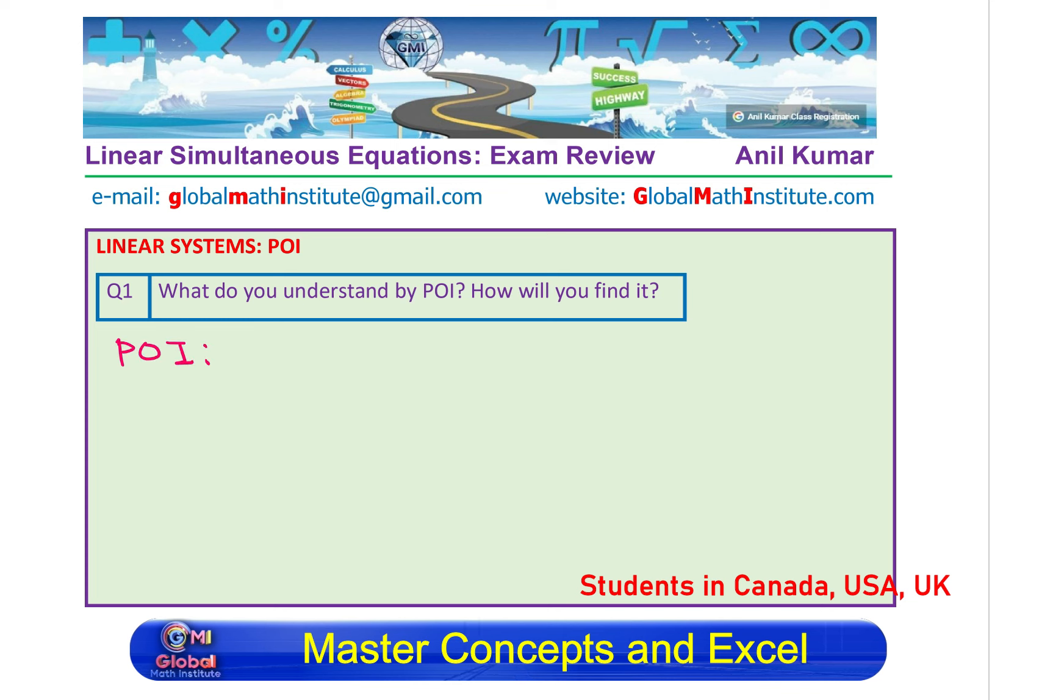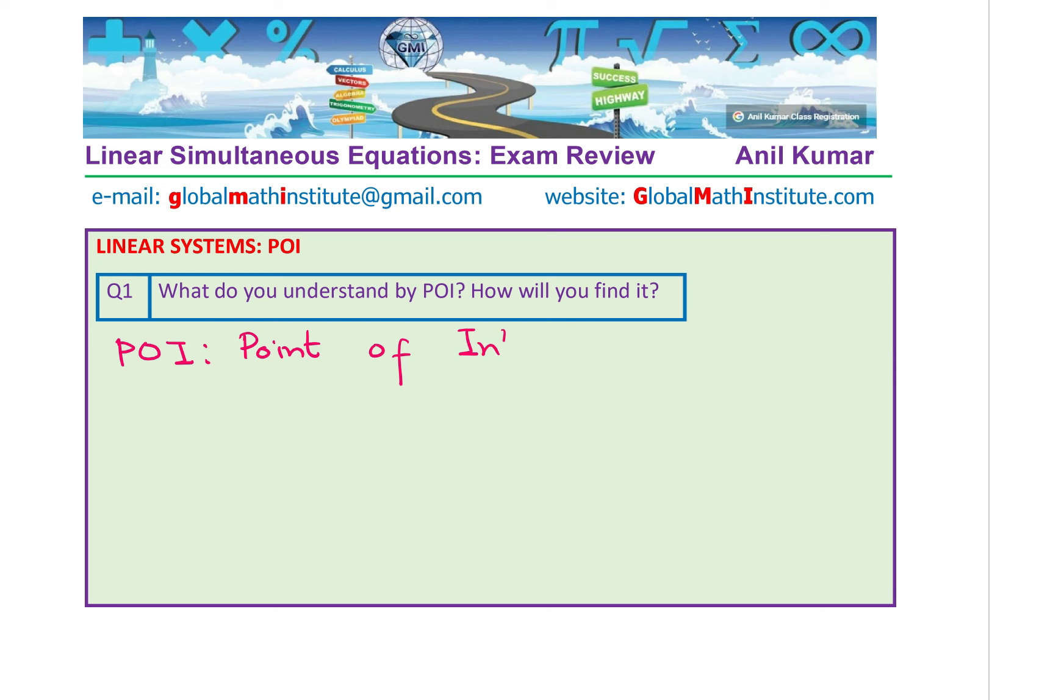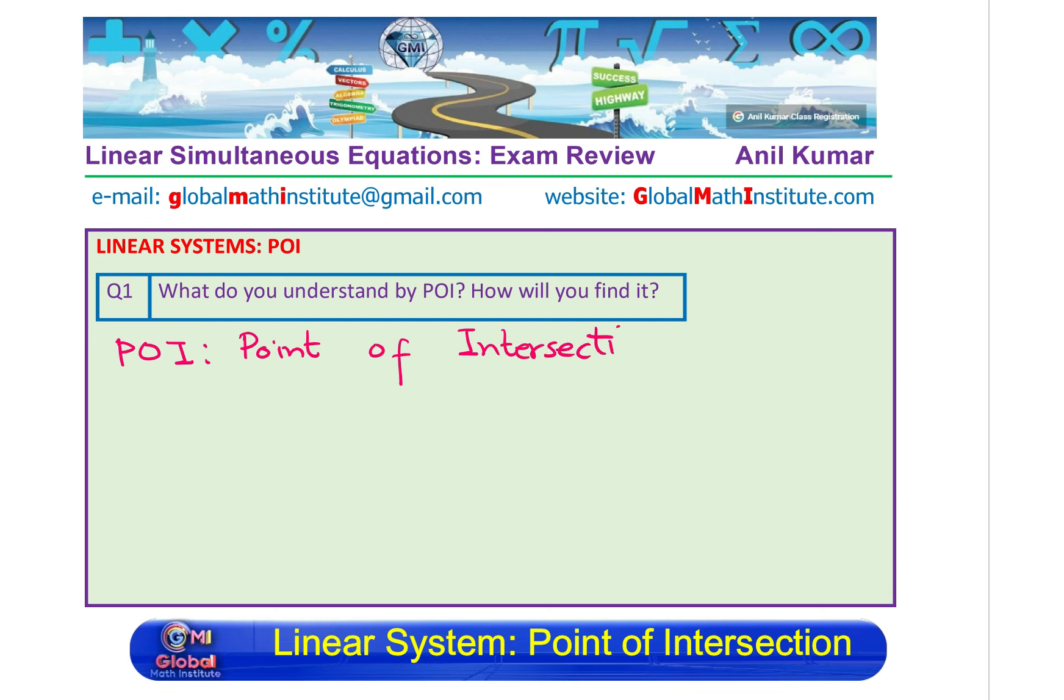Let us begin with the very first one which is, what is point of intersection, the POI? So, as you know, POI is a short form which is referring to point of intersection. So, for any system, point of intersection is actually the solution. POI stands for point of intersection. POI is solution of a linear system. That is what it stands for.